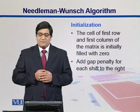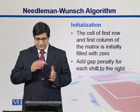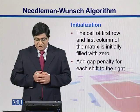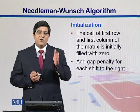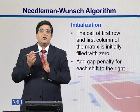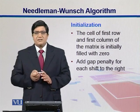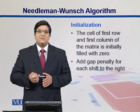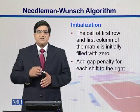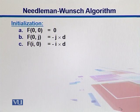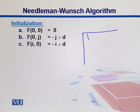In initialization, the cell at the first row and first column of the matrix is initially filled with zero — that is the first cell where rows and columns intersect with one another. Then we add a gap penalty for each shift to the right, moving one column at a time while staying in the same row. We are moving one element further in the top strand placed on the column, while substituting gaps on the rows.